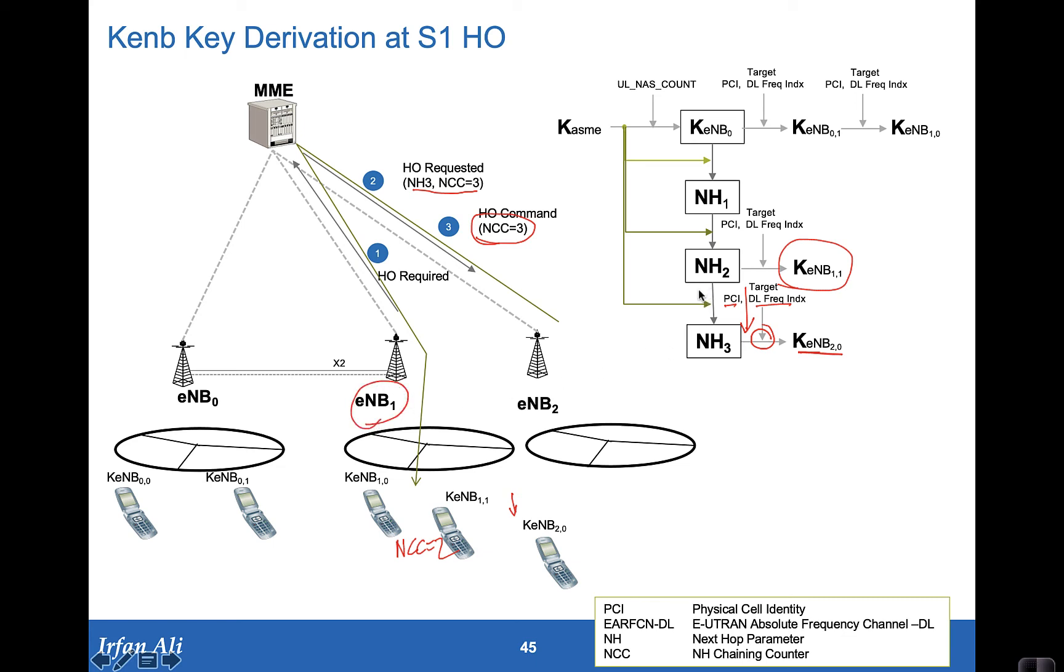And this key now cannot be derived by E-node B1 because E-node B1 cannot derive NH3 because the NH3 derivation from NH2 requires KSME.